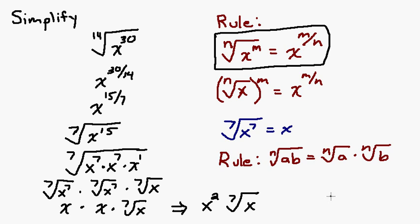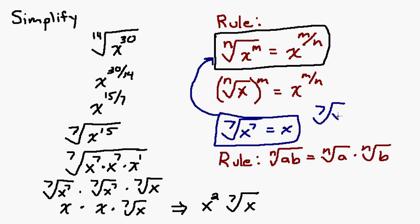That is your final simplified answer. To reiterate why this works: using our rule, the 7th root of x to the 7th rewrites as x to the 7 over 7, which is x to the 1st, which is x. Whatever your index is, use it to determine how to break up what's underneath the radical. If you can reduce the fraction first, do that before simplifying — I'd suggest reducing first and then simplifying what's underneath your radical.